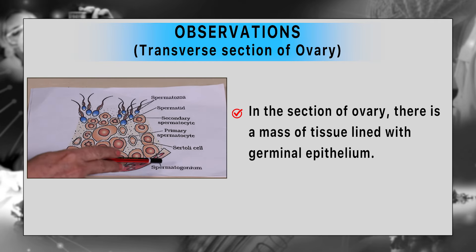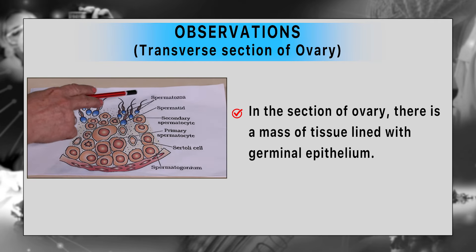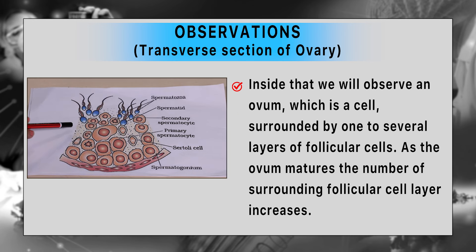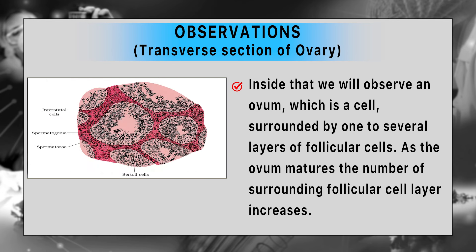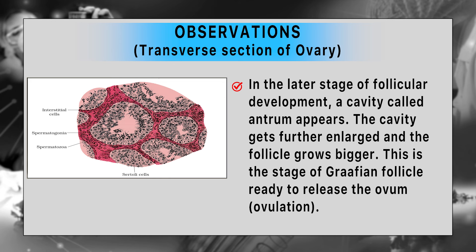Now let us observe the TS of the ovary. In the section of ovary, there is a mass of tissue lined with germinal epithelium. Inside that, we will observe an ovum, which is a cell surrounded by one to several layers of follicular cells. As the ovum matures, the number of surrounding follicular cell layers increases. In the later stages of follicular development, a cavity called the antrum appears. The cavity gets further enlarged and the follicle grows bigger.